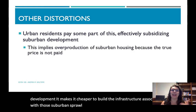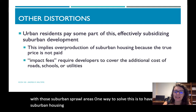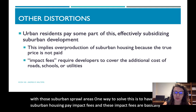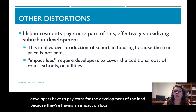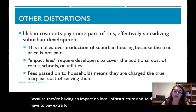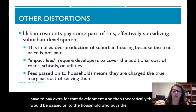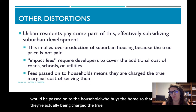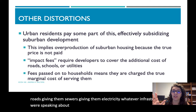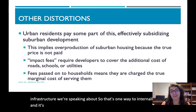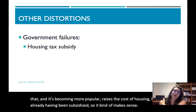One way to solve this is to have suburban housing pay impact fees. These fees require developers to pay extra for development because they're having an impact on local infrastructure. Theoretically, that fee gets passed on to the household who buys the home, so they're actually being charged the true marginal cost of providing roads, sewers, electricity, and other infrastructure. It's becoming more popular — it raises the cost of housing, but the housing has already been subsidized, so it makes sense.